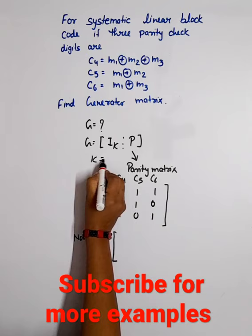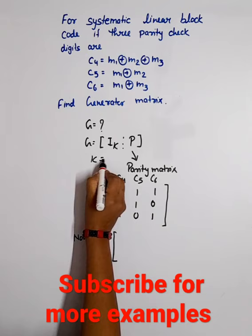Now G equals K value 3 and 3 identity matrix. We write out the parity matrix, and finally we get the generator matrix.